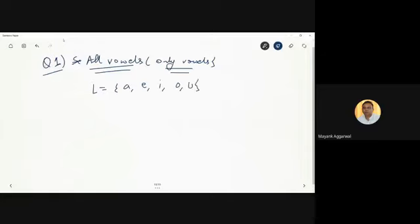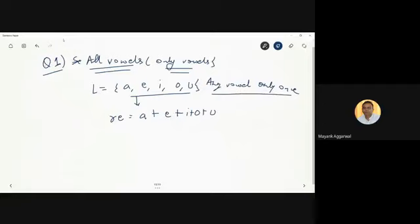It accepts only vowels, so the language is made of a, e, i, o, u. The vowels are finite, so the regular expression is: a + e + i + o + u. This is the regular expression for the language which accepts any vowel which comes only once. Any vowel which comes only once.